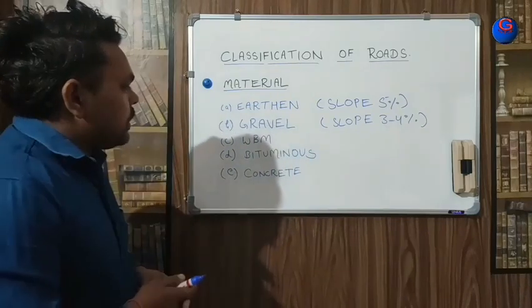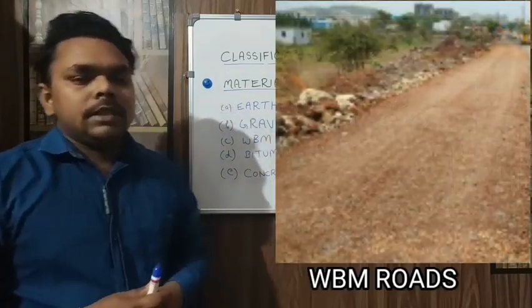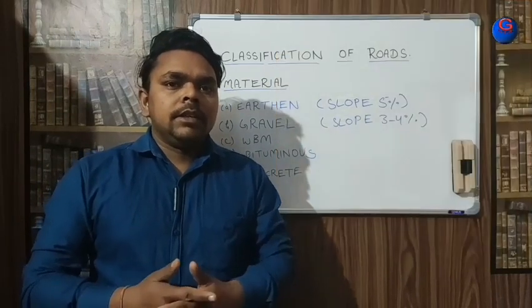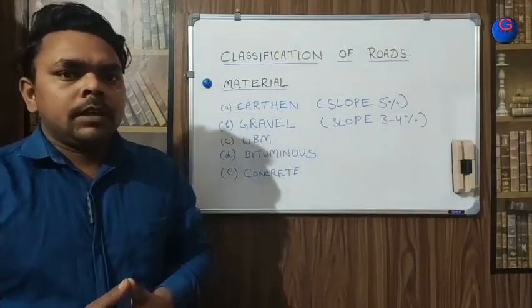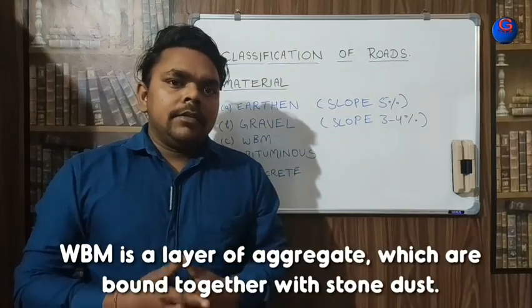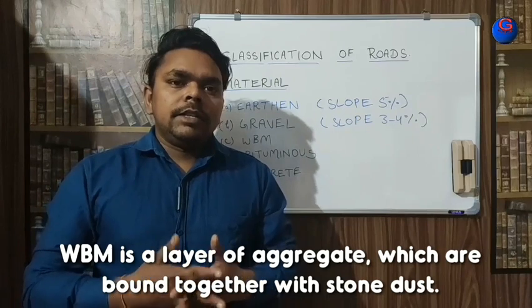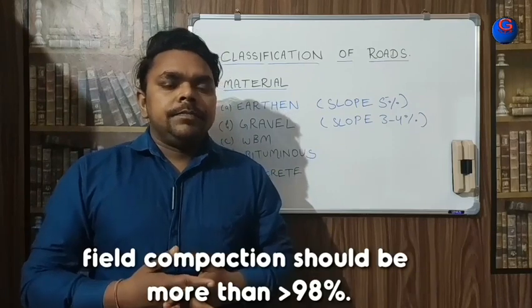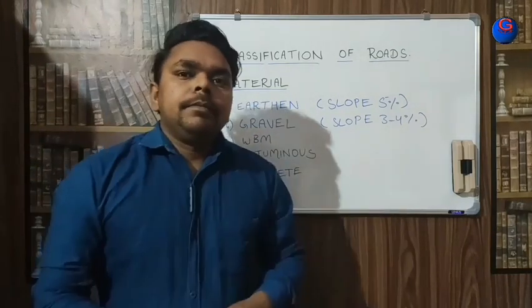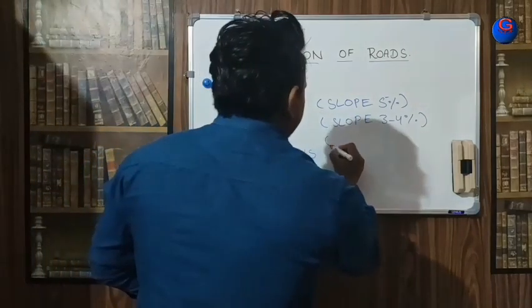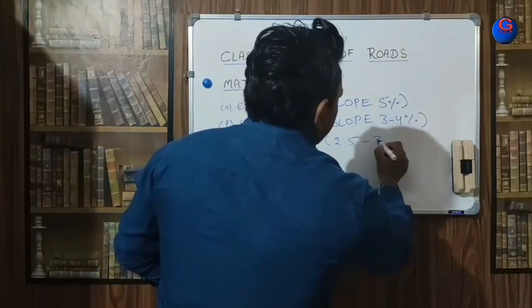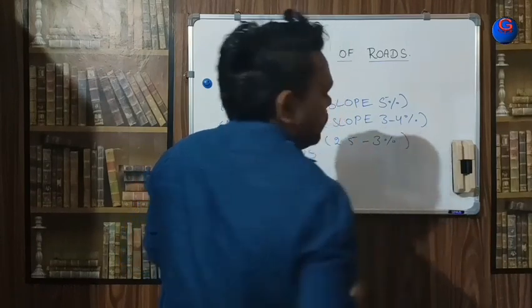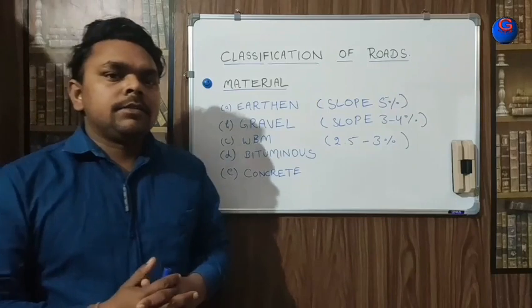Our next type is WBM, which stands for Water Bound Macadam. Water Bound Macadam also acts as a base course for flexible and rigid pavements. WBM consists of finely graded fine and coarse aggregates which are mixed with water and then compacted to get the maximum dry density. In WBM we provide a slope of 2.5 to 3 percent for drainage purposes.